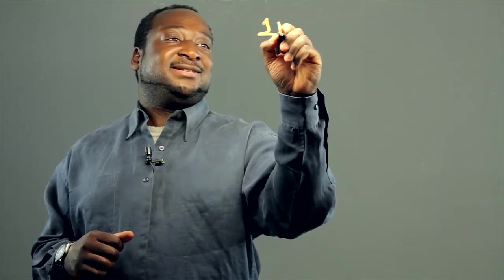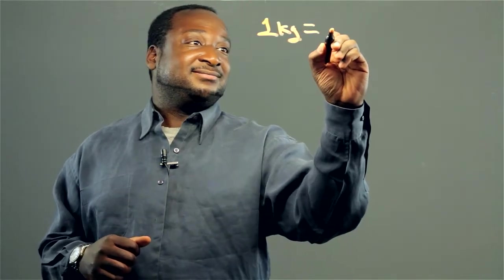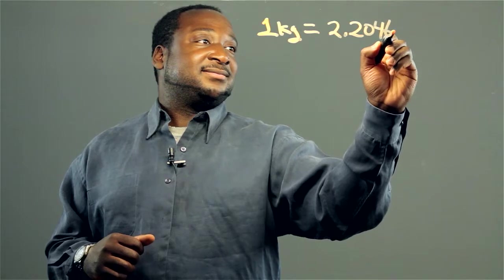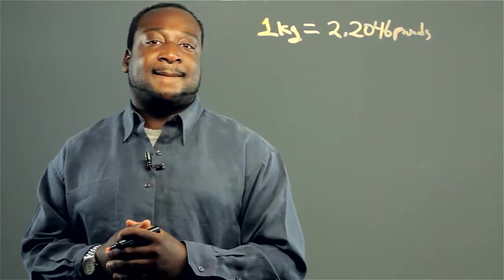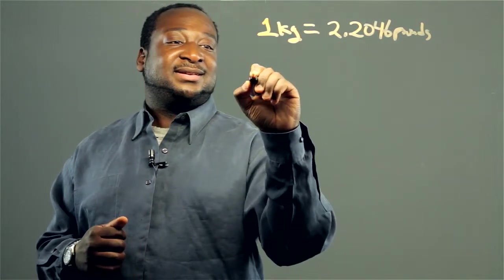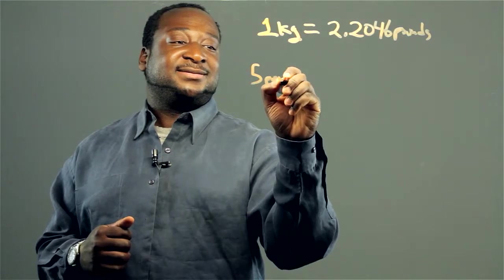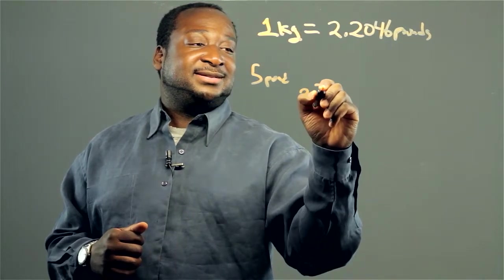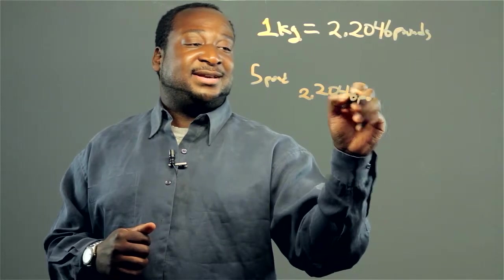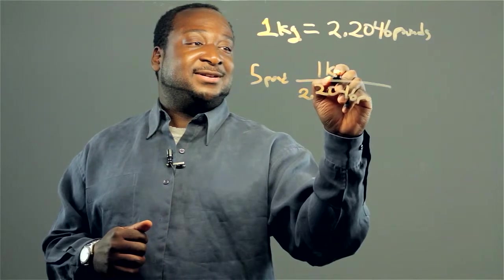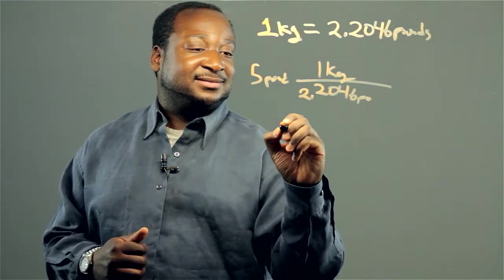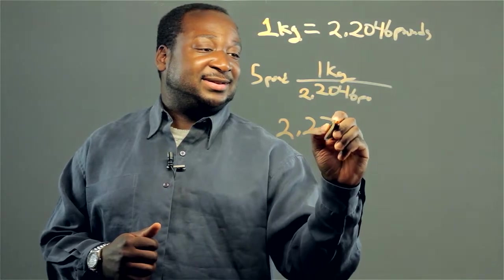To convert pounds, we'll use our key. One kilogram is equivalent to 2.2046 pounds. So let's say you have 5 pounds. We use our key to convert this to kilograms — that's 2.2046 pounds divided by 1 kilogram — and that's equivalent to 2.27 kilograms.